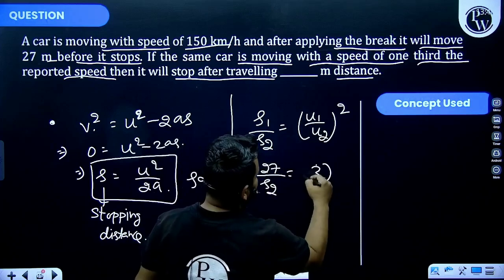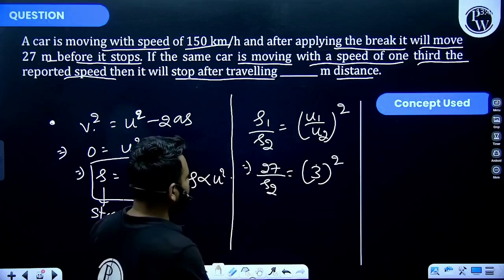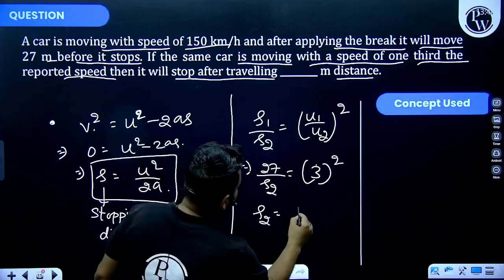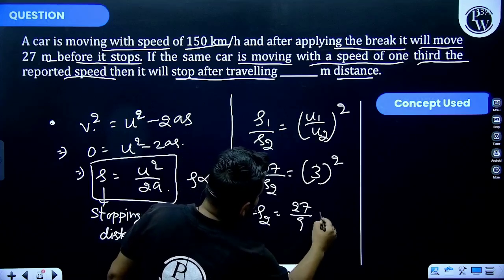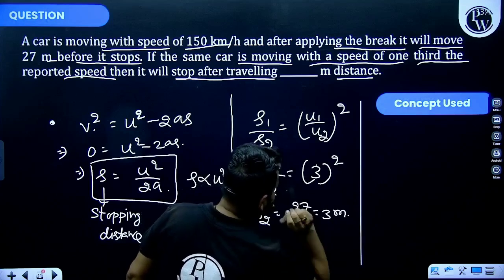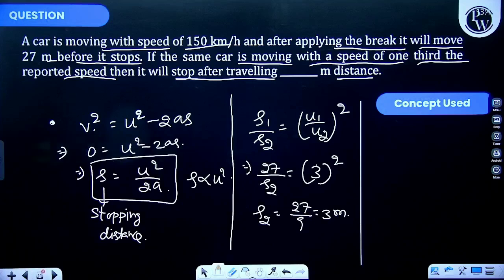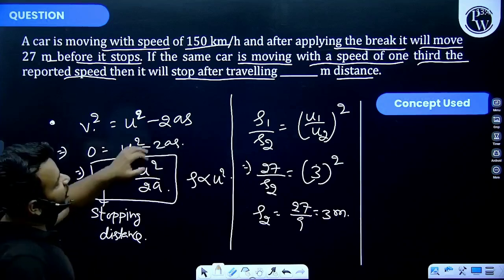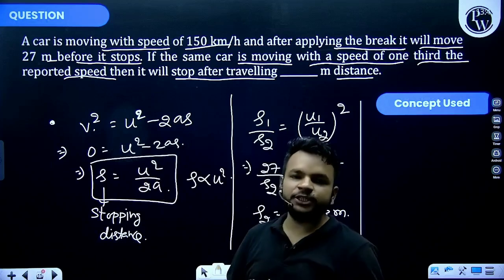So if the speed of car becomes one-third of the initial speed, the distance required for stopping of the car is 3 meters.